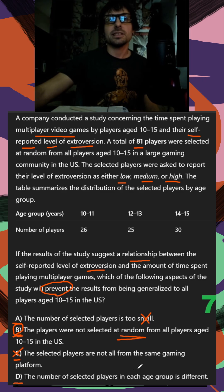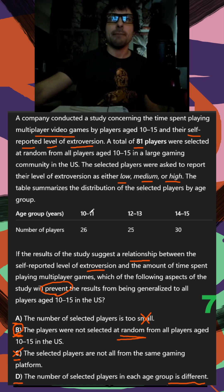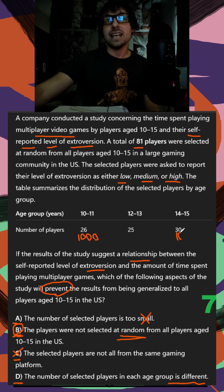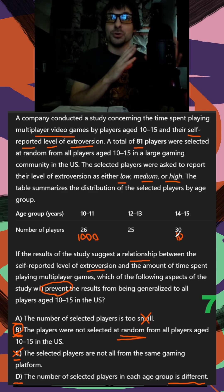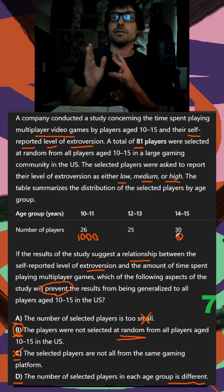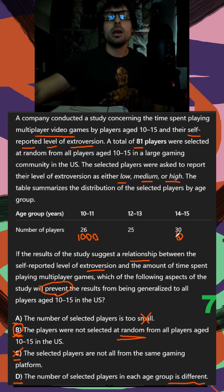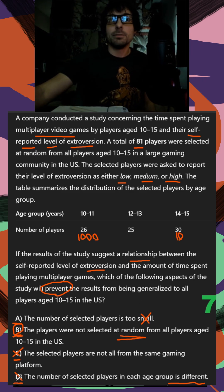In D, the number of selected players in each age group is different. The only time I can imagine that mattering is if one number was like 1000 and another was 10, because then it wouldn't be a good distribution of ages 10 to 15 — it would be mostly 10 to 11. But that's not the case; our numbers are pretty similar. So the answer is B.